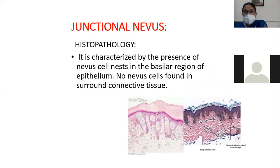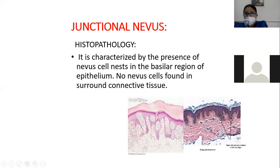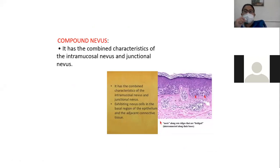Histopathologically, the junctional nevus is characterized by the presence of nevus cell nests in the basilar region of the epithelium. No nevus cells form in the surrounding connective tissue — the nevus cells are present at the basal layer, at the dermo-epidermal junction. The compound nevus is histopathologically characterized by combined nevus cells in both the intradermal and junctional areas.